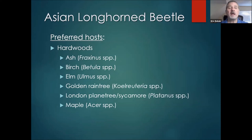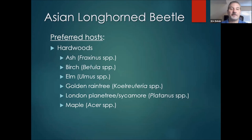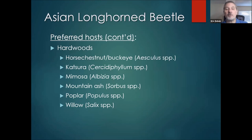Preferred hosts are hardwood species — ash, unfortunately, so that's a double whammy: both emerald ash borer and Asian longhorn beetle will feed on ash. But whereas emerald ash borer is pretty much contained to ash trees, Asian longhorn beetle will feed on several others including birch, elm, even golden rain tree, sycamores and London plane trees, maples — some of their favorites — horse chestnut and buckeye, katsura, mimosa, sorbus, mountain ash, poplars, and willows. These are all viable preferred host trees for Asian longhorn beetle, giving us a wider range of tree species to be on the lookout for.